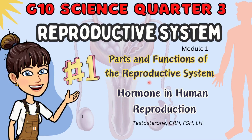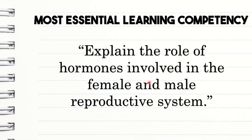Hello students! It's been a while. Welcome back again to Maestrang Techie YouTube channel. For today's video lesson, we are going to talk about Grade 10 Science Quarter 3 Lesson: Human Reproductive System. This is our most essential learning competency: explain the role of hormones involved in the female and male reproductive system. If you want to know more about this lesson, please keep on watching.